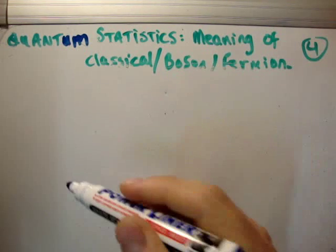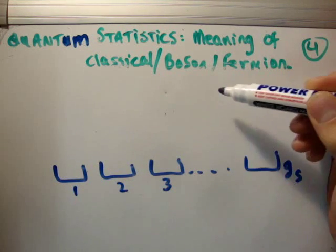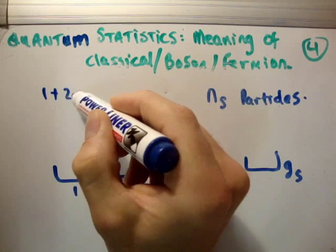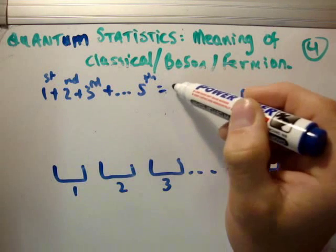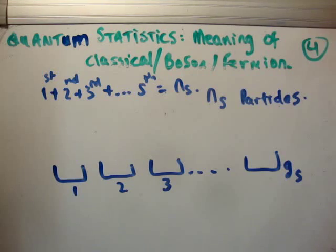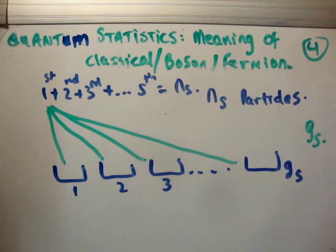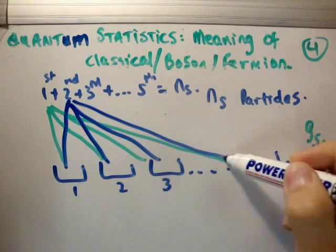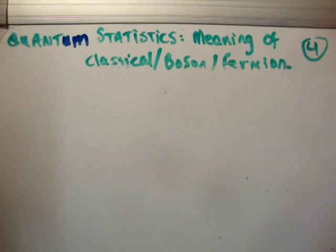For non-interacting particles — which applies to bosons and classical particles — let's say we have G sub S states and N sub S particles. The first particle comes along and can go into any one of these G sub S states, so it has G sub S possible places to go. Because what the first particle does is independent of what the second particle does, the second particle can also go anywhere it likes. The same applies to the third, fourth, and all the way up to the S-th particle — each of them has G sub S different places to go.